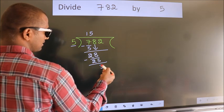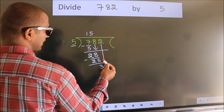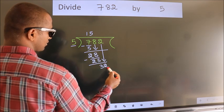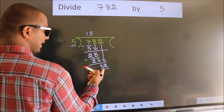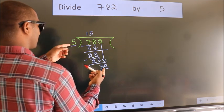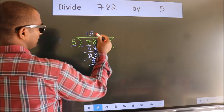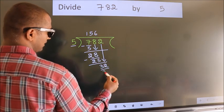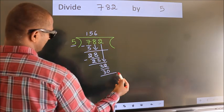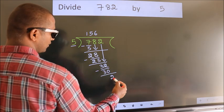After this, bring down the next number. So, 2 down, making 32. A number close to 32 in the 5 table is 5 sixes, which is 30. Now, we subtract and get 2.